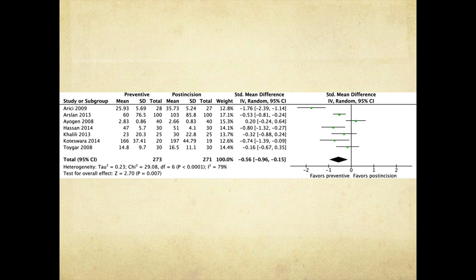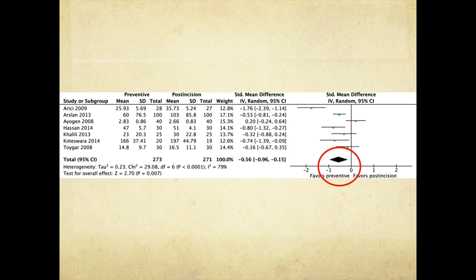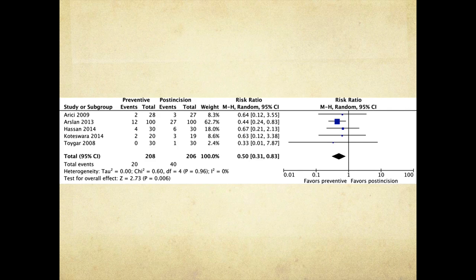Here's an example of a forest plot where the confidence intervals for individual studies vary quite a lot and don't overlap much — reflected in a high I-squared value of 79%, indicating high statistical heterogeneity and reduced confidence in precision. Another example shows confidence intervals overlapping more, reflected in a low I-squared of 0%, giving more confidence that results don't vary by more than would be expected by chance.